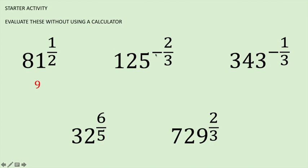The negative part tells us to take the reciprocal of that value. So we have the cube root of 125, which is 5, then we square it to get 25, and then we take the reciprocal. So the answer is 1 over 25.